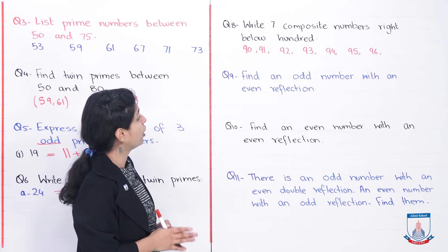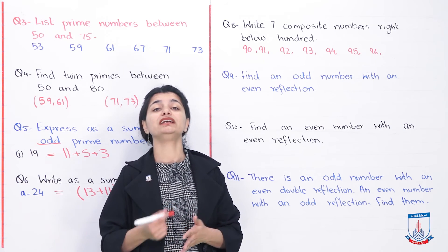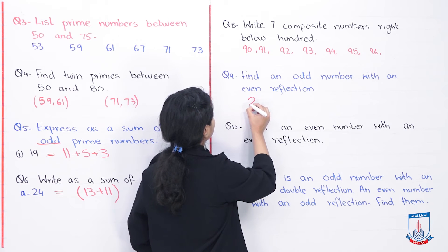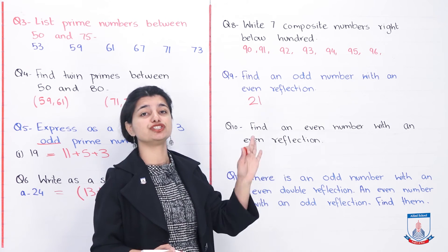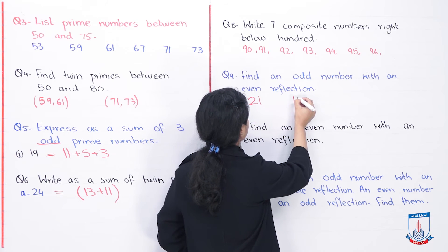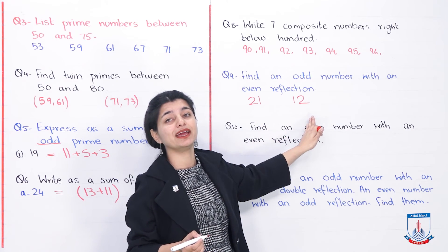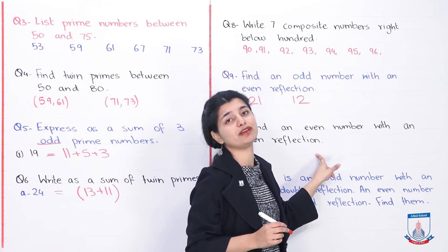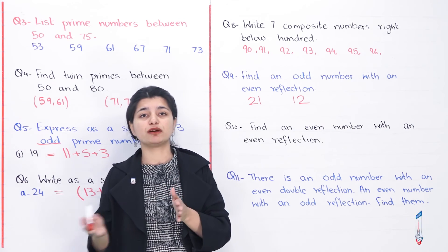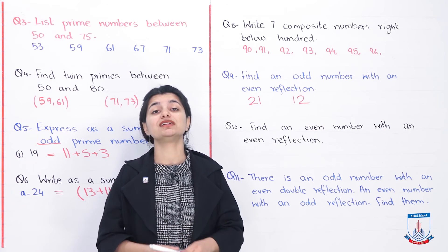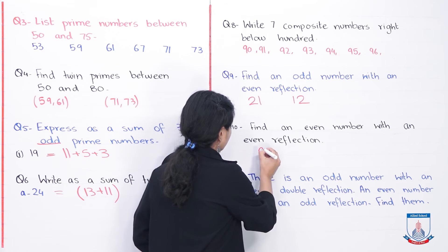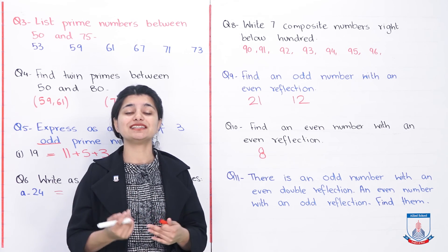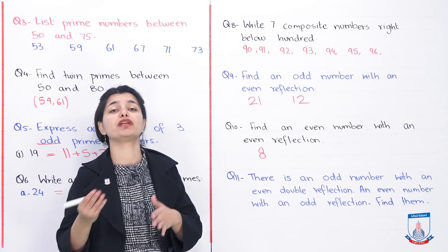The next question: find an odd number whose mirror reflection is even. The example is 21. When you reflect 21 in a mirror, it becomes 12, which is even. Then: find an even number whose reflection is also even. The answer is 8 — when reflected in a mirror, 8 looks the same, so it remains even.